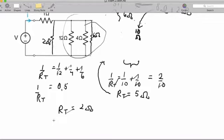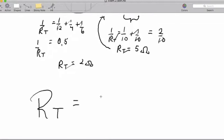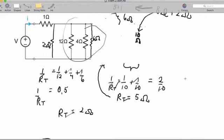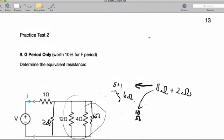Our final answer is 3 ohms of resistance. That's question 8, which is only for G period - it's a bonus question for F period. Now I'm going to move on to question number 9.